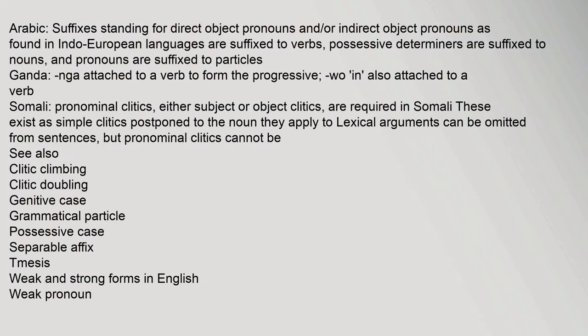In Arabic, suffixes standing for direct object and/or indirect object pronouns are suffixed to verbs, possessive determiners are suffixed to nouns, and pronouns are suffixed to particles. In Ganda: 'na' is attached to a verb to form the progressive, and 'wo' is also attached to a verb. In Somali, pronominal clitics — either subject or object clitics — are required. These exist as simple clitics postponed to the noun they apply to; lexical arguments can be omitted, but pronominal clitics cannot.